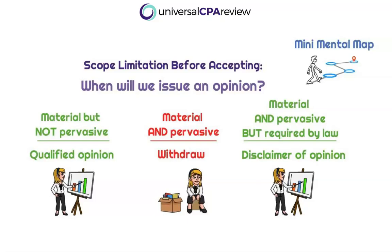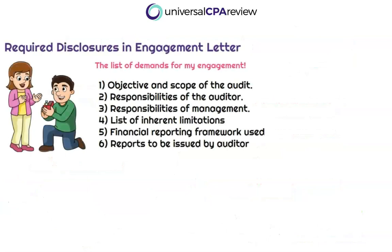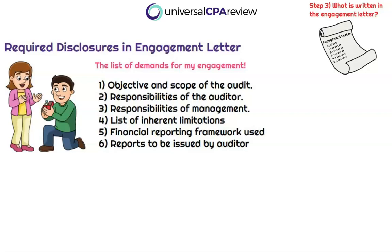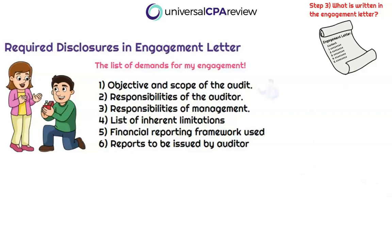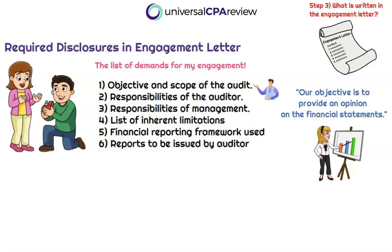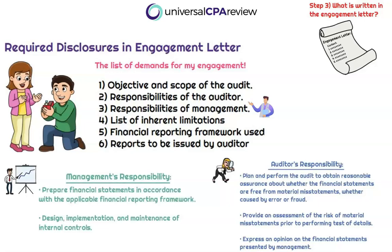The next question in our mental map: what is actually written in the engagement letter? The AICPA outlines what needs to be included. Rather than memorizing the list, let's understand intuitively why this content makes sense. The engagement letter should outline the overall objective and scope of the audit — what are we trying to get done and how much work will be performed? We need to outline responsibilities: what are Detective Lucy's responsibilities, and what is Max's responsibility at Accrual World? Both auditor and management responsibilities need to be disclosed.